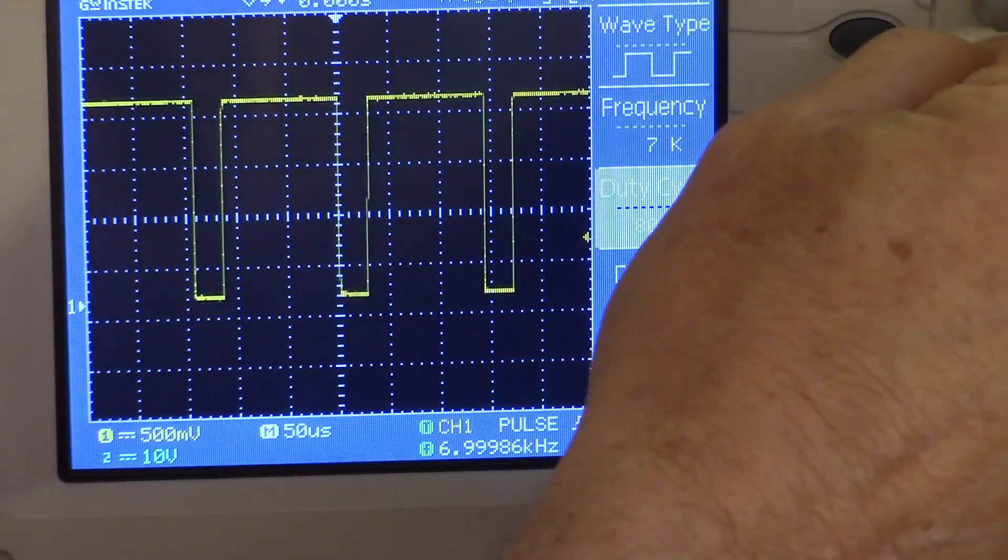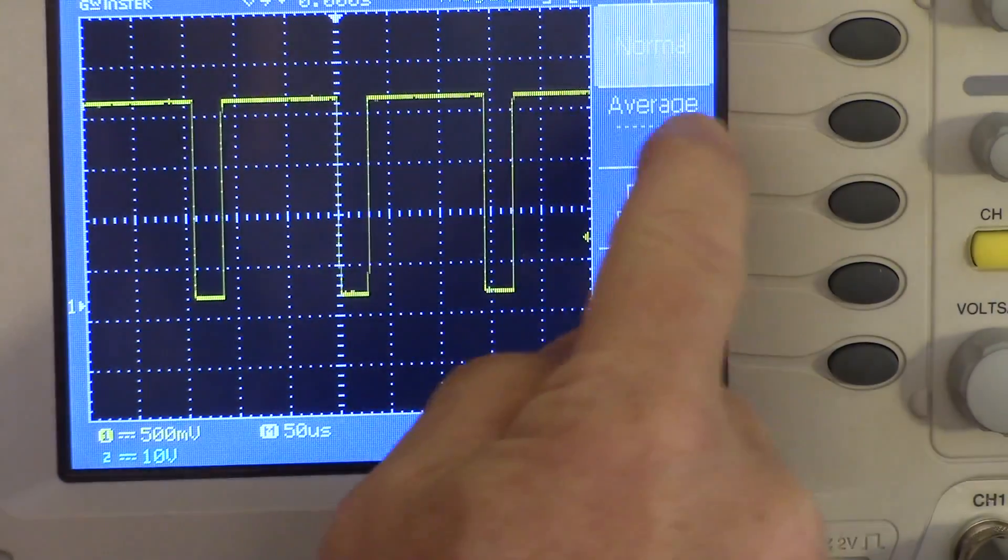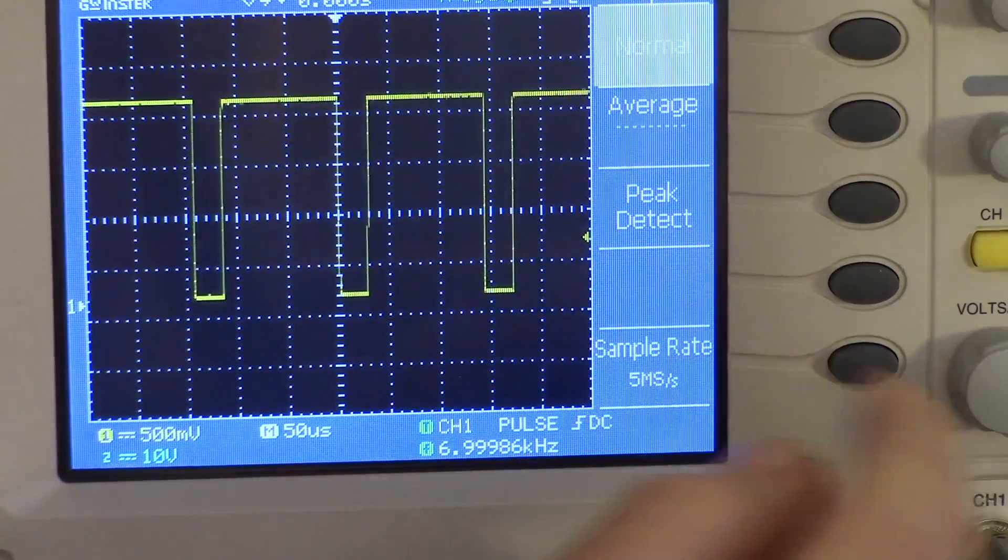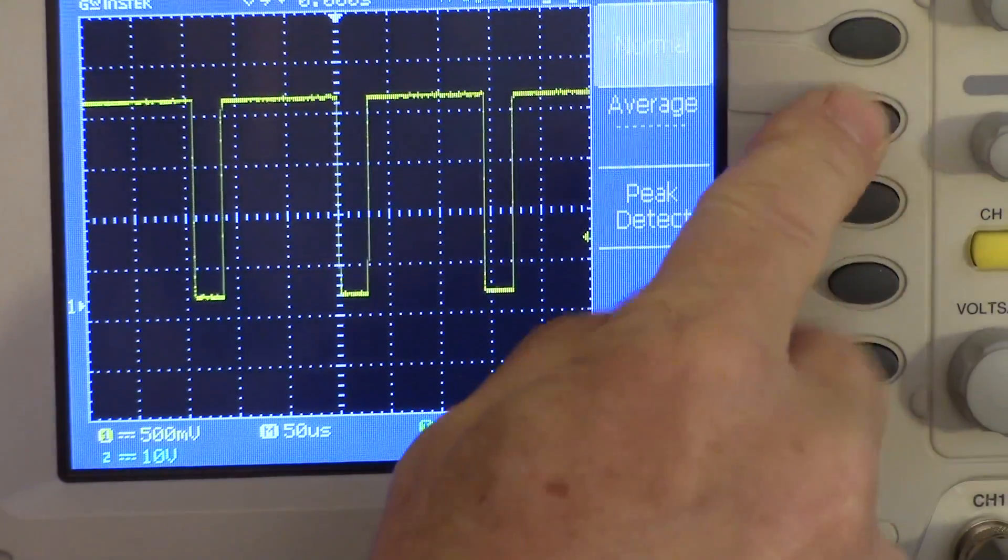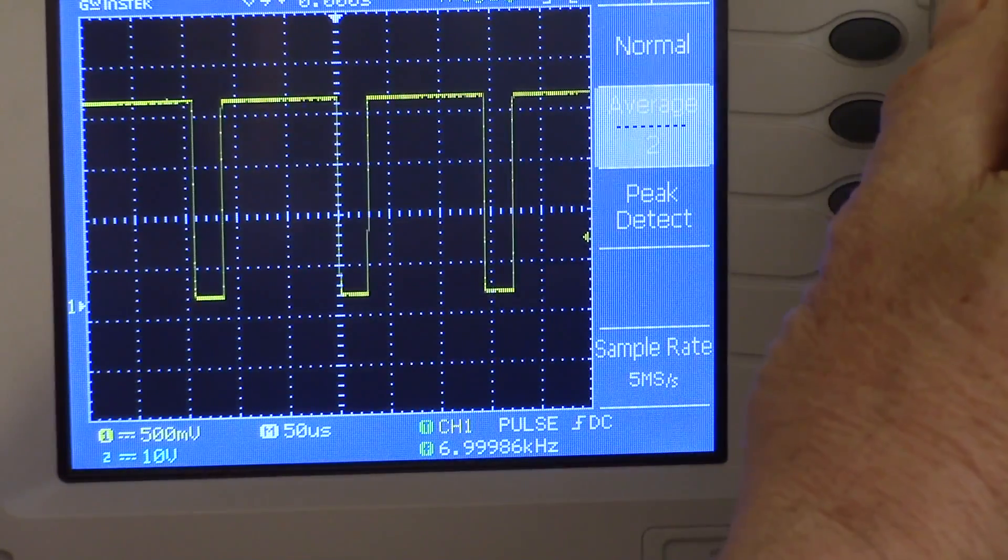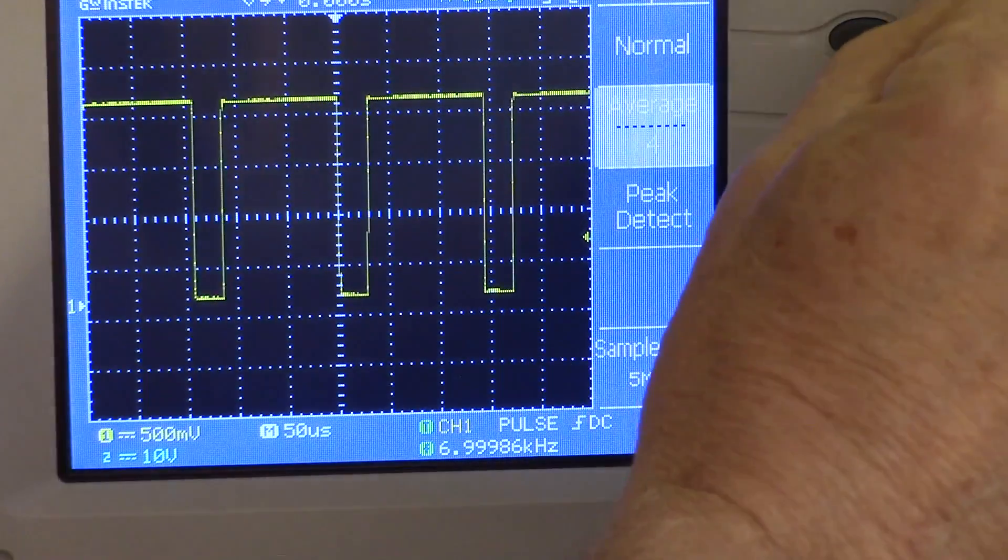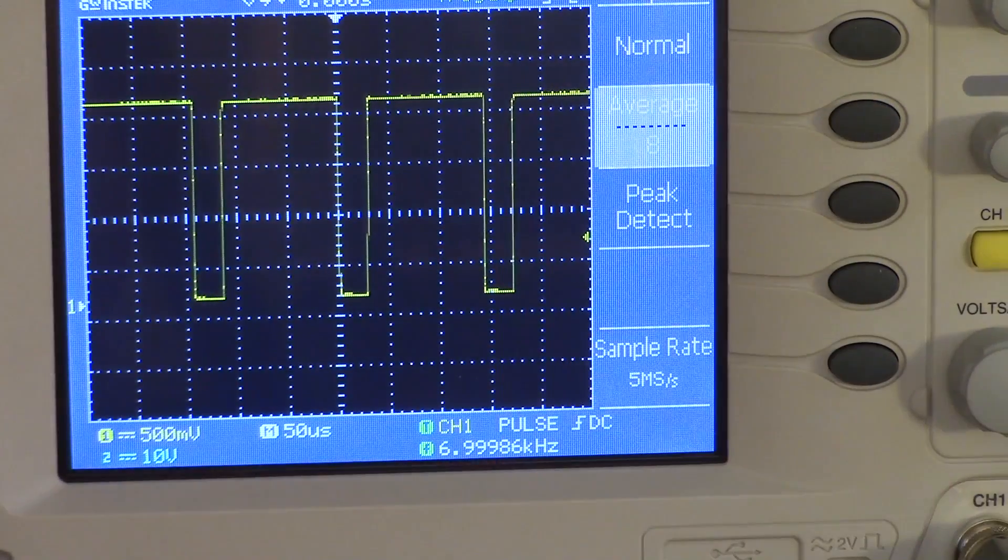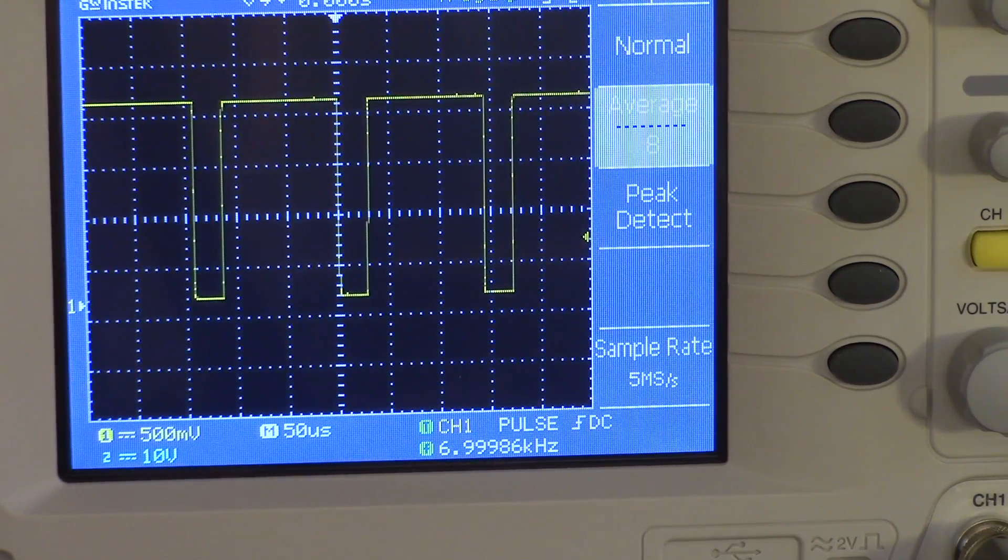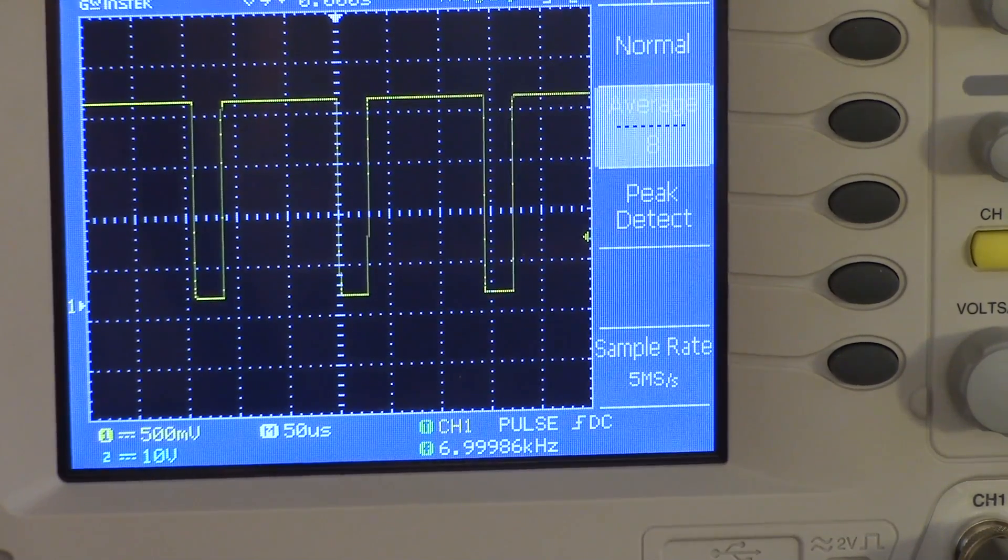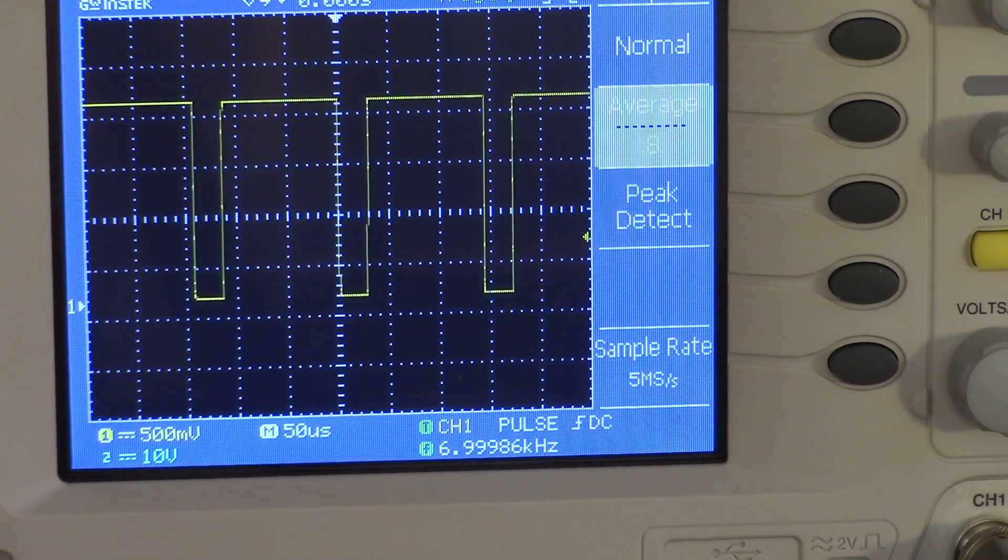There are three acquisition modes, which are selectable here: Normal, average, and peak detect. With average, you can select an average of 2, 4, 8, all the way up to 256 samples that are averaged together. There's also this peak detect mode, which is supposed to detect the largest and lowest values of a waveform, but I couldn't make that work.